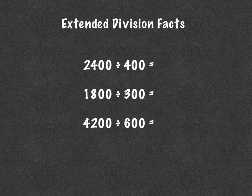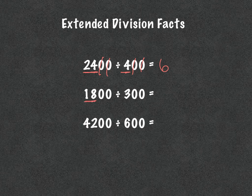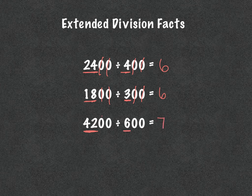Same concept: 24 divided by 4 is 6, and then I cancel out my zeros, so my answer is 6. Then 18 divided by 3 is 6, and if I match up my zeros, the answer is 6. And 42 divided by 6 is 7, and then I match up my zeros, and my answer is 7.